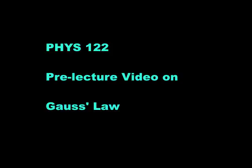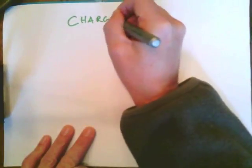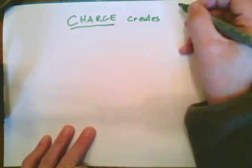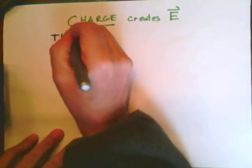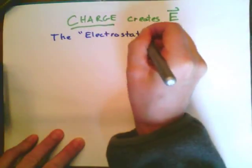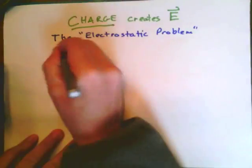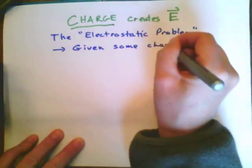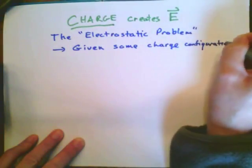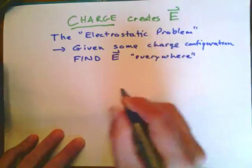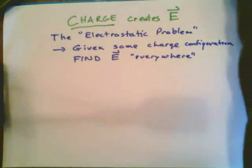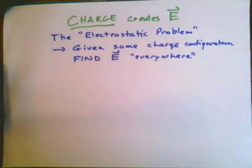Welcome to the Physics 122 pre-lecture video on Gauss's law. We know that charge creates the electric field. We can state the general electrostatics problem in this way: given some specific charge configuration, we need to find the electric field everywhere in space in the vicinity of that charge. We have a tool for doing that.